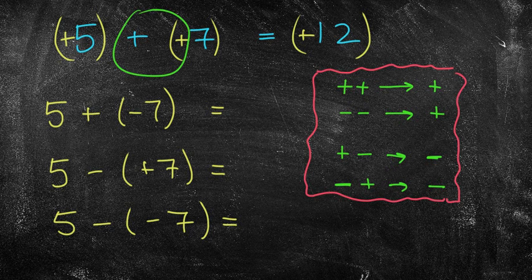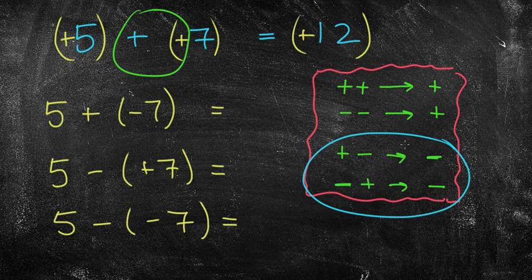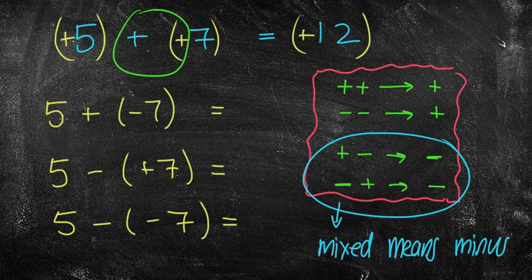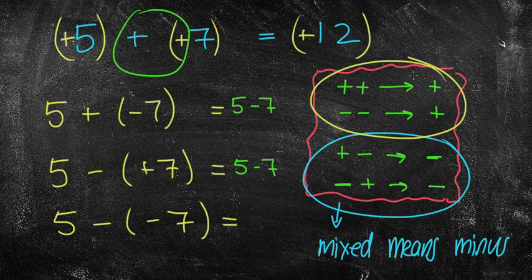Now, I do have a little rule to help me remember that. This one particularly, I often say, mixed means minus. So, for example, these first two questions, 5 plus negative 7, I have mixed signs, so I'm going to replace them with a negative. 5 minus plus 7, I'm going to replace them with a negative.